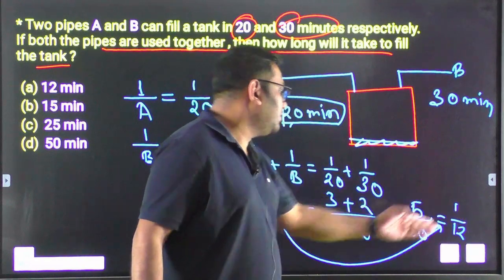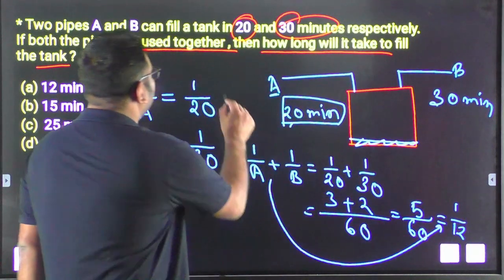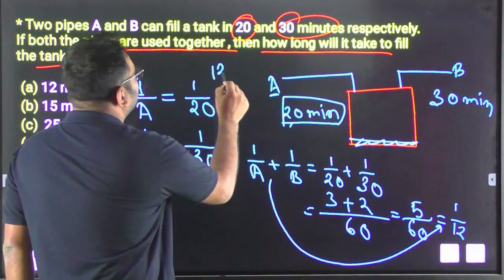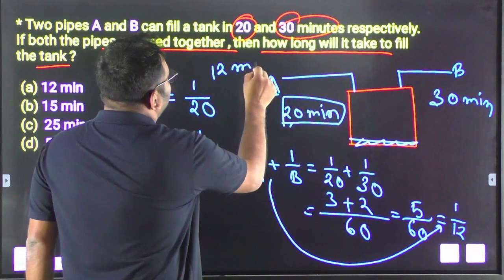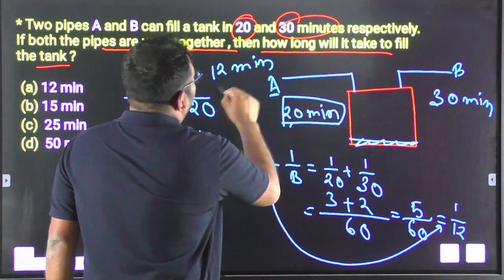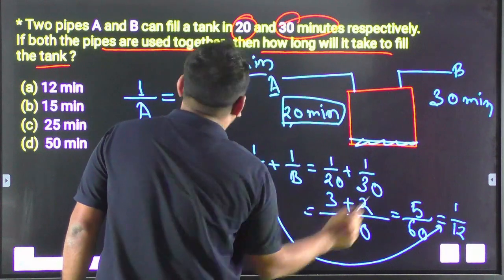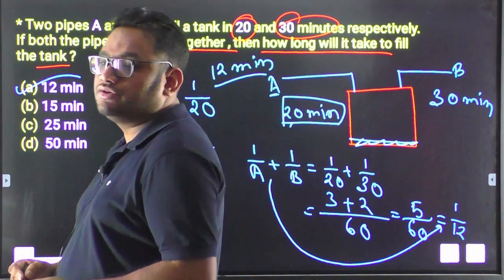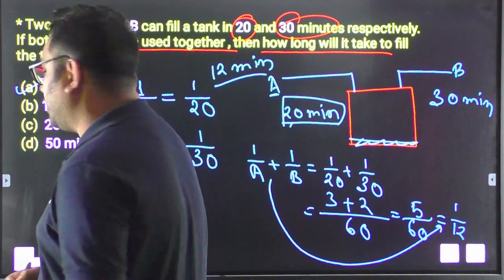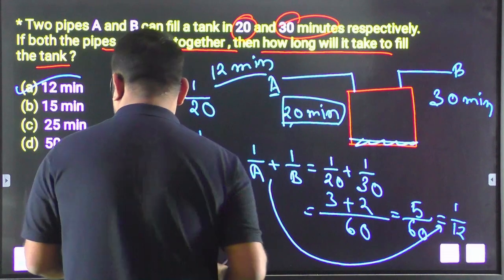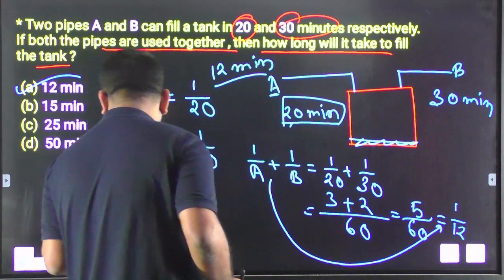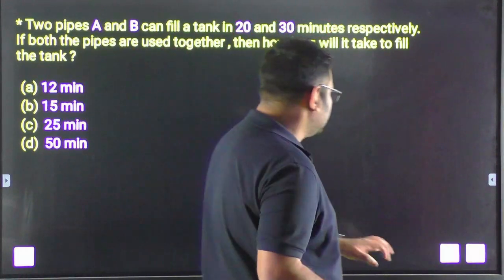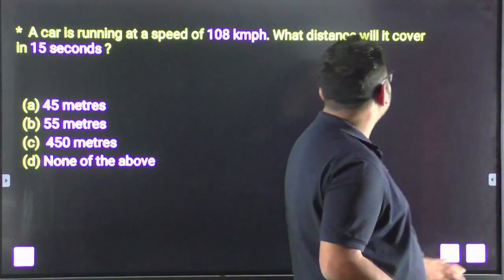So together both pipes fill the tank in 12 minutes. You can put your answer as option A in the comment box and I will explain it to you.